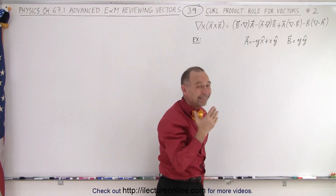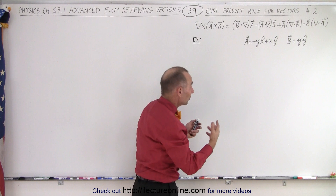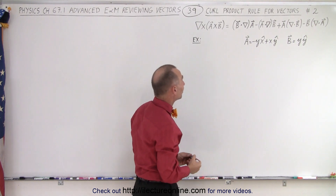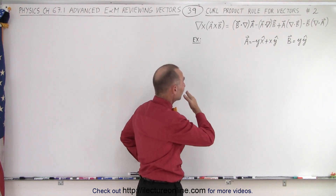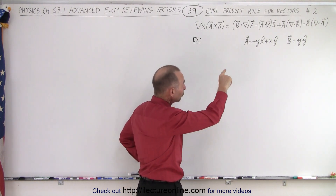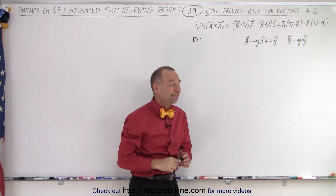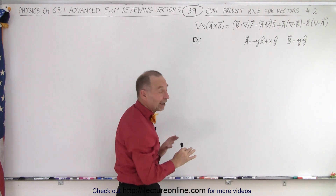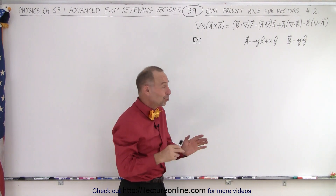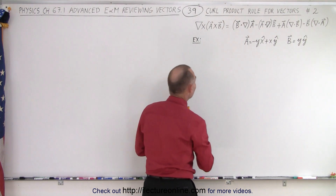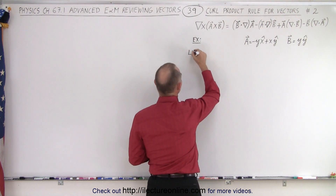We don't need the function f — that was for the first rule — so let's get rid of that. Let's see if that's indeed correct using this particular example. What we're going to do is first compute the left side and then each of the four terms on the right side. Let's start with the left side.